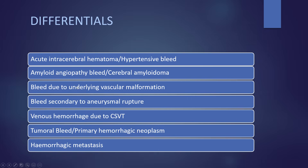Coming to the differentials to consider in this case: acute intracerebral hematoma or hypertensive bleed, amyloid angiopathy bleed or cerebral amyloidoma, bleed due to underlying vascular malformation, bleed secondary to aneurysmal rupture, venous hemorrhage due to cerebral venous sinus thrombosis, and tumoral bleed or primary hemorrhagic neoplasm or hemorrhagic metastasis. These are the commonly considered differentials in case of a lobar bleed.